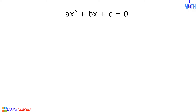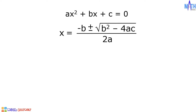Let us consider a quadratic equation of the form ax squared plus bx plus c is equal to zero, where a, b, and c are real numbers and a is not equal to zero. In the quadratic formula, x equals negative b plus or minus the square root of b squared minus 4ac, all over 2a. The radicand b squared minus 4ac is called the discriminant.